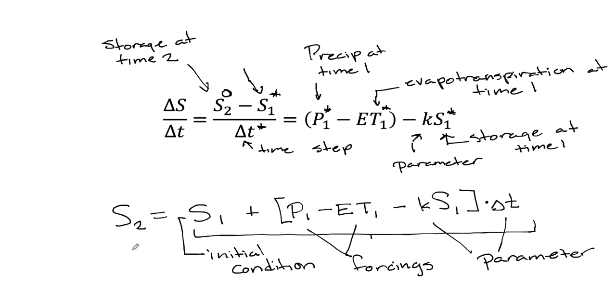When you have an equation like this with only one unknown and a whole bunch of knowns, I can just do some algebraic manipulation and get S2 equal to S1, that's the storage at time one, plus P1 minus ET1 minus kS1 all times delta T. If I know all of these, I can plug in numbers and I can get a value of storage at the next time step.